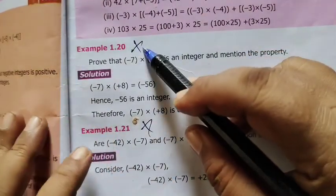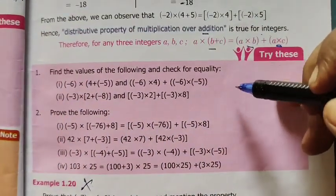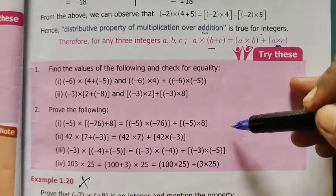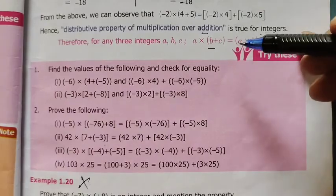Example 1.20. Try this. Let's try this. Let's see the questions. Let's show it to those who are interested. You can do this yourself using this property.